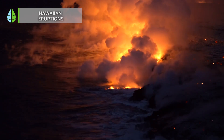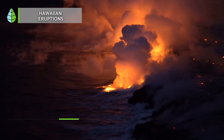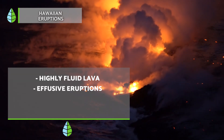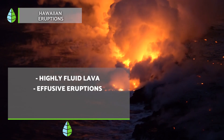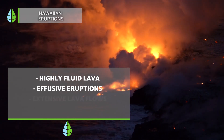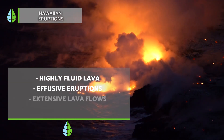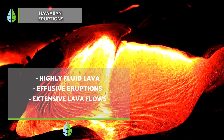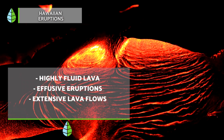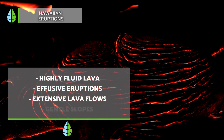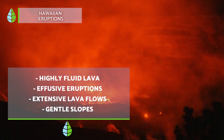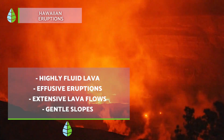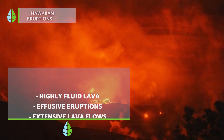Hawaiian eruptions are the most common type worldwide, named after the volcanoes in Hawaii which exhibit these characteristics. The lava produced is highly fluid, containing minimal explosive gases, resulting in gentle eruptions where lava overflows from the crater, forming rivers that can travel considerable distances before solidifying. Consequently, the resulting volcanic cones have a gentle slope due to the gradual descent of lava materials.